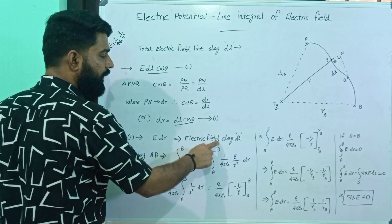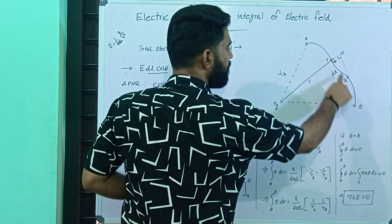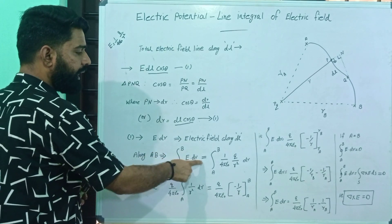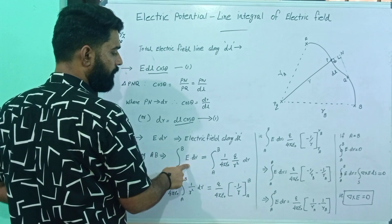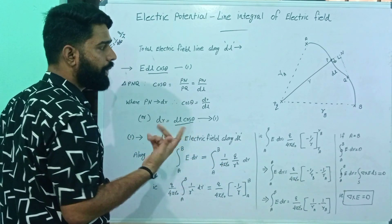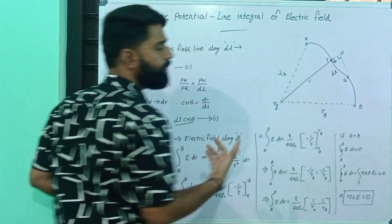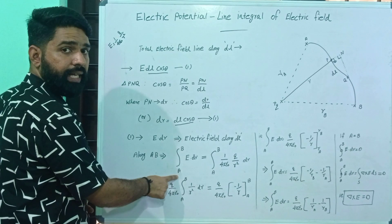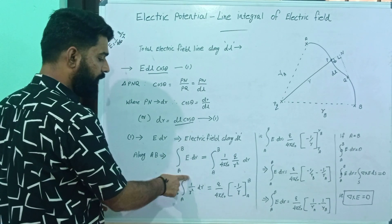So we consider the electric field component along dL, along path A to B. The total integral of E·dL from A to B is the path integral. Integral from A to B of E·dr equals integral from A to B of E, where E equals 1/(4πε₀) · Q/r². Substituting E, with Q/(4πε₀) as constant, we integrate 1/r² as a variable.